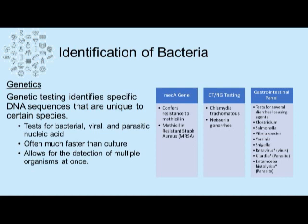One such panel that can be multiplexed for the detection of multiple organisms at once includes a gastrointestinal panel, which checks for several diarrheal-causing agents at the same time, including Clostridium, Salmonella, Vibrio species, Yersinia — which is the causative agent for bubonic plague — Shigella, as well as viruses such as rotavirus, or parasitic infections such as Giardia or Entamoeba histolytica.